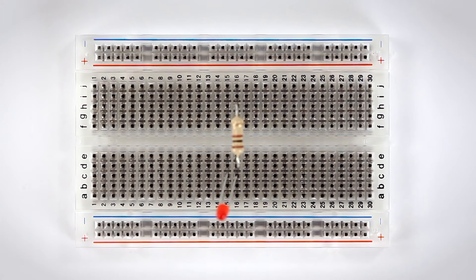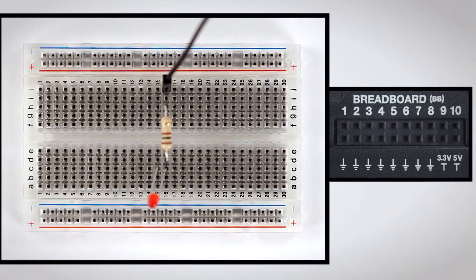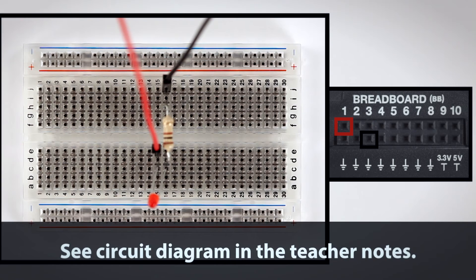Next, bend the legs on the resistor and insert one into the pin above the LED's short leg. The other leg goes in the same row on the other side of the gap. Connect the resistor to a ground pin on the TI Innovator hub with a black cable, and use a red cable to connect the long leg of the LED to the BB1 pin.